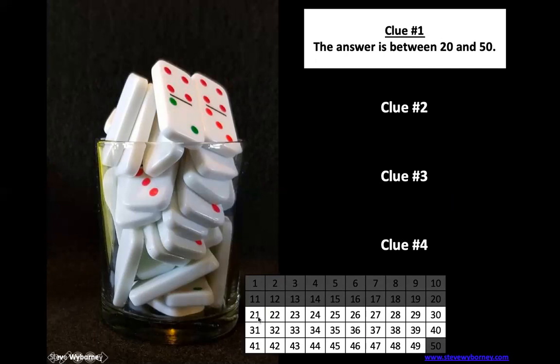Let's go ahead and cross out the numbers one through 20 and the number 50. That leaves us 21 through 49. If your initial guess is one of those numbers we just crossed out, go ahead and update your guess using one of the numbers that are still white. This is what we do in math. As we get more information, we can fine-tune our guesses.